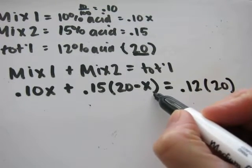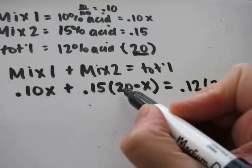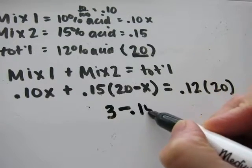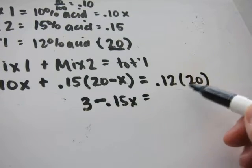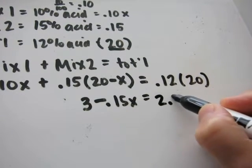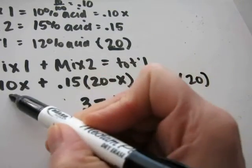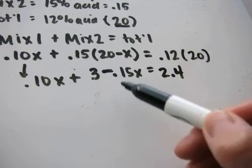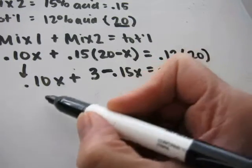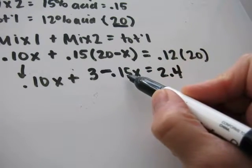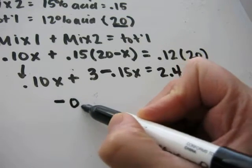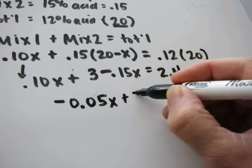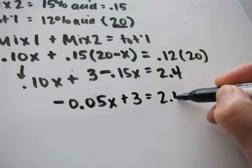Let's start by getting rid of the parentheses here. .15 times 20 will equal 3 minus .15 x. .12 times 20 equals 2.4. Carry down the .10 x. Add together, or in this case, because we have a subtraction sign, subtract the coefficients of x. .10 minus .15 is negative .05 x plus 3 equals 2.4.